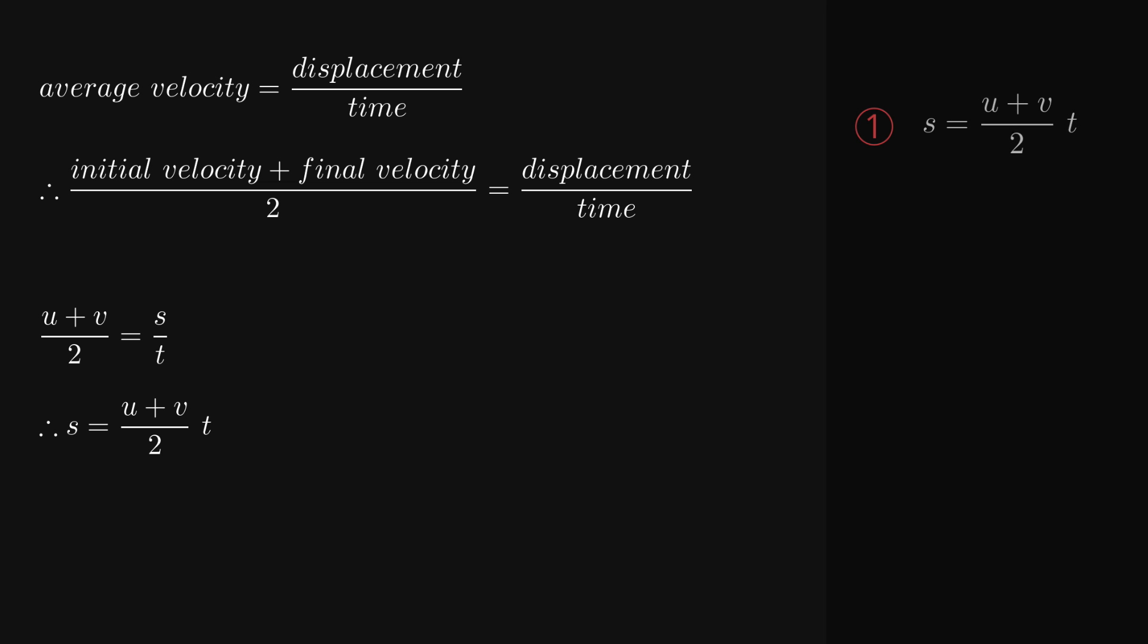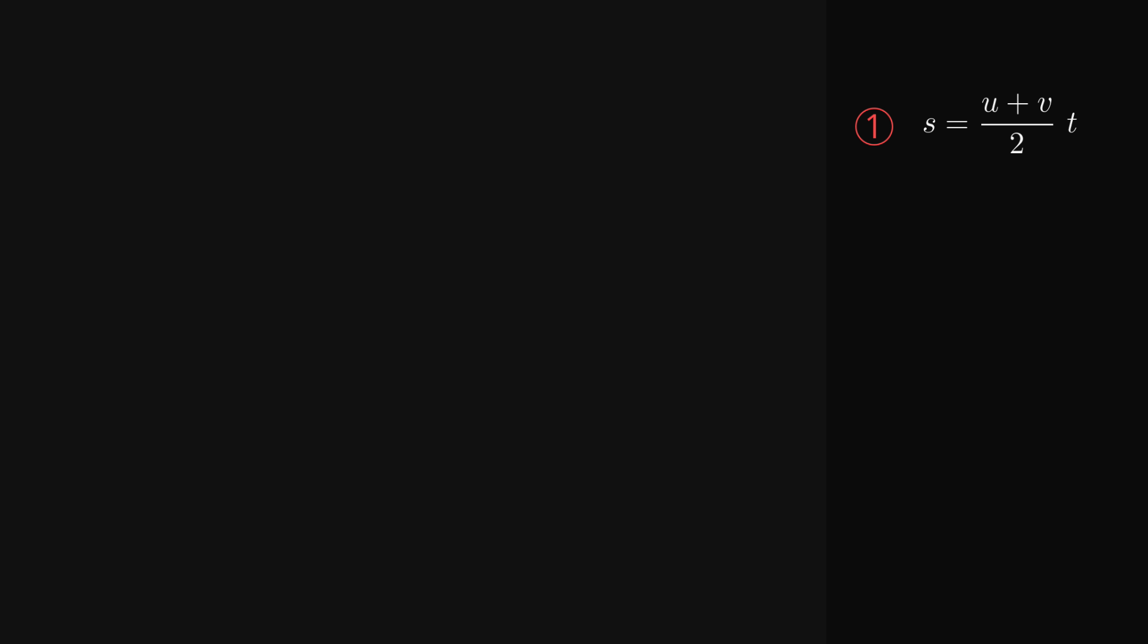The average of two numbers is just both of them added together and then divided by 2. So average velocity, or initial velocity plus final velocity over 2, is equal to displacement over time. If we substitute in our variable names, this is actually one of our kinematic equations, although it's usually rearranged by multiplying both sides by time to get it in the form displacement equals initial velocity plus final velocity over 2 multiplied by time.